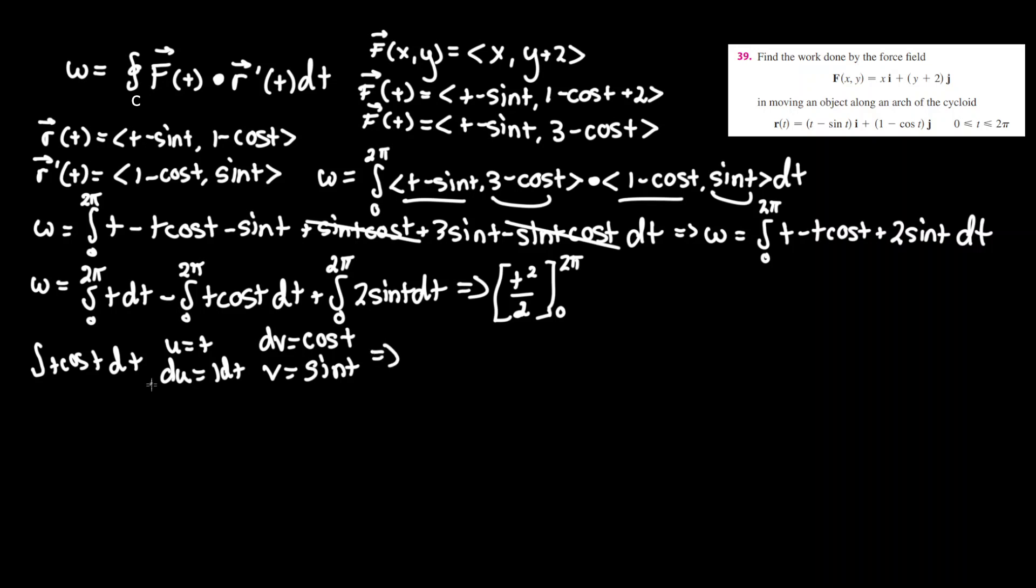In this, evaluating by parts, we know that this will be uv, which is t sine t, minus integral of vdu, which is sine t times dt, so sine t dt.